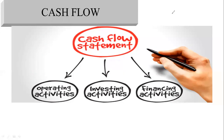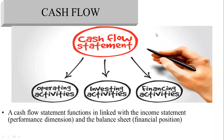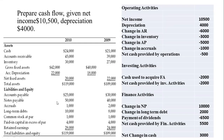Here is a comprehensive example linking income statement performance with balance sheet financial position. We prepare the cash flow given that net income from taxes is $10,500. The first item in operating activities is $10,500 as an inflow. Next, we add depreciation of $4,000 — found either as given or from the difference between accumulated depreciation values of $18,000 and $22,000.